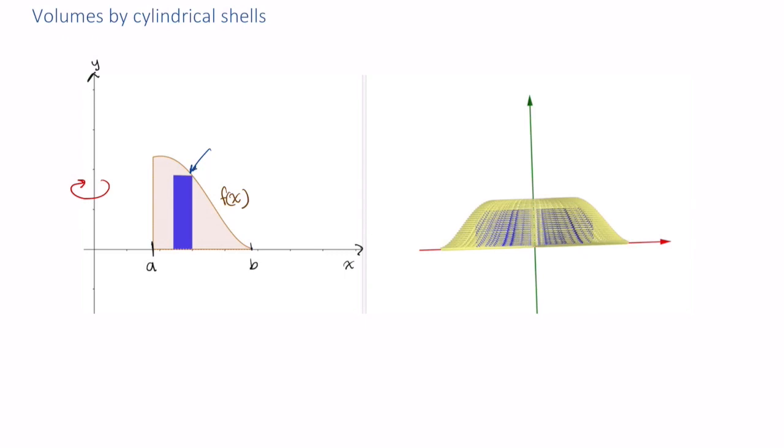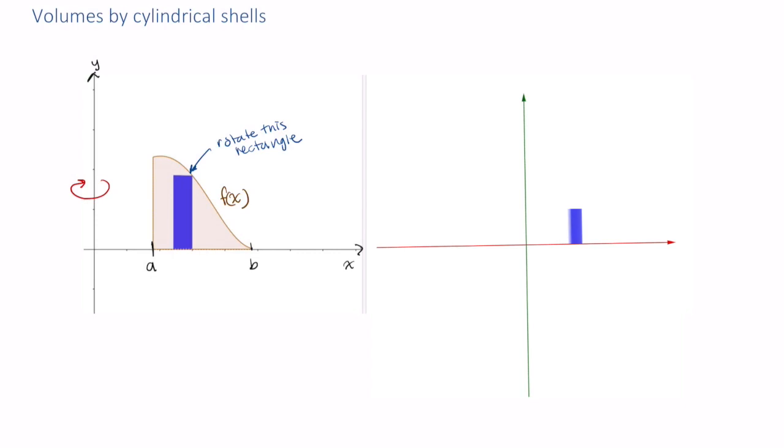If we wanted to compute the volume of this solid using cylindrical shells, we would take this rectangle—just any rectangle right there—and rotate this rectangle.